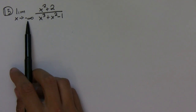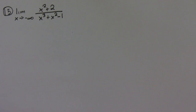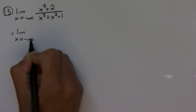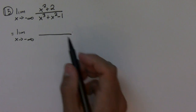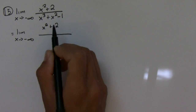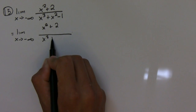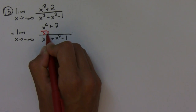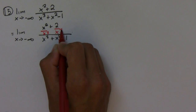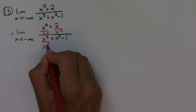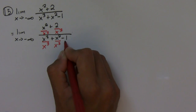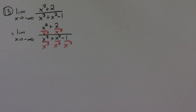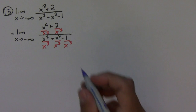This time we're going to negative infinity, but we still approach the problem the same way — we're still going to divide by x to the highest power. The highest power is 3, so I'm going to divide by x cubed.